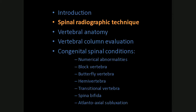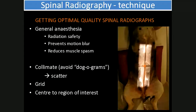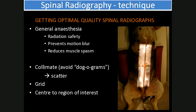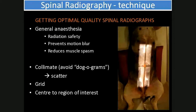Next we'll move on to spinal radiographic technique. Getting optimal spinal radiographs is very important because lesions can be quite subtle. This is achieved by sedation or general anesthesia, which helps radiation safety, eliminates patient motion, and allows for accurate positioning. If myelography needs to be performed afterwards, one can proceed directly. Collimation is needed to prevent scatter from reaching the cassette, and a grid is mandatory to reduce scatter. One needs to center at the region of interest.